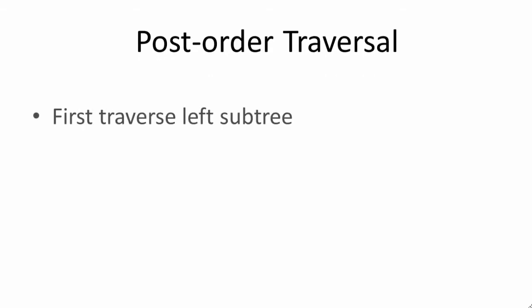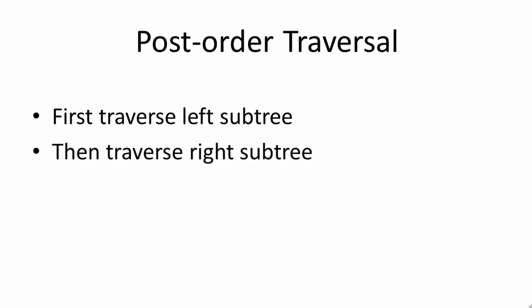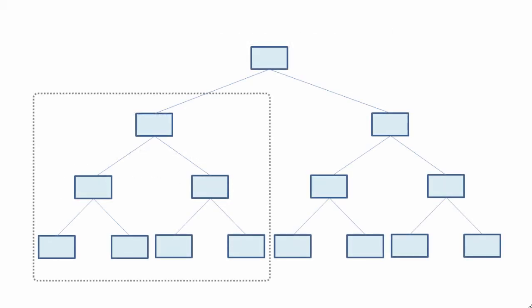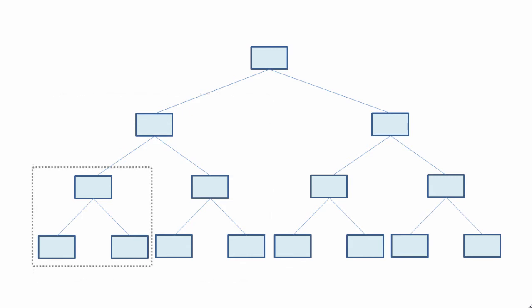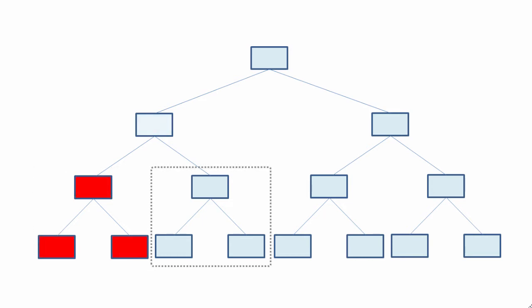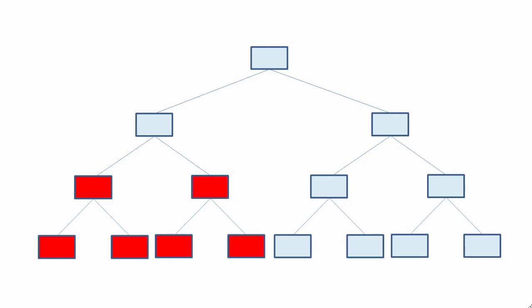With post-order traversal, we begin by traversing the left subtree, then the right subtree, and lastly we visit the root. Starting with the left subtree, which itself has a left subtree, we go left, right, root. Now we examine the right subtree of this root: left, right, root. And now that we've examined the left subtree and the right subtree of this root, we can visit this root.